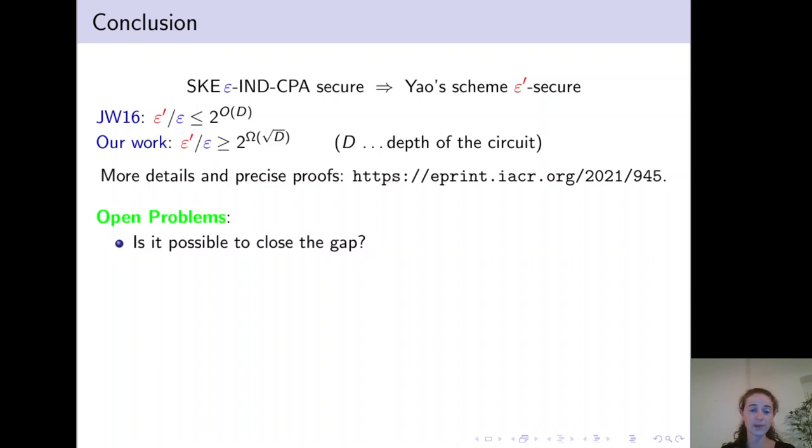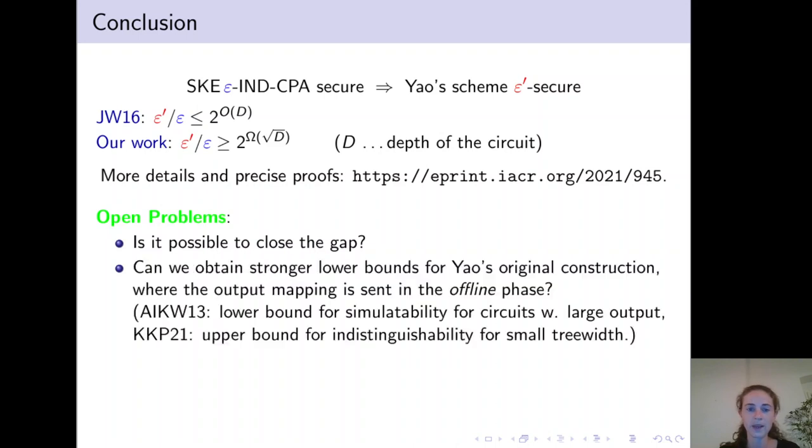I want to mention some open problems. First of all, it would be interesting to close the gap between our lower bound and the upper bound by Jafargholi and Wichs. We believe that our lower bound could be improved, potentially even to a bound exponential in the depth, but this would require a more sophisticated pebbling lower bound. At the moment we do not know how to do that.